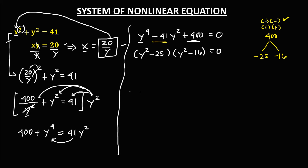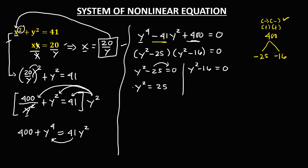Equate these factors to zero. For y squared minus 25 equals 0: y squared equals 25, take the square root, so y equals positive or negative 5. Therefore y equals 5 and y equals negative 5.